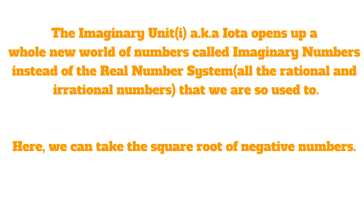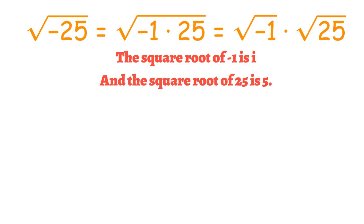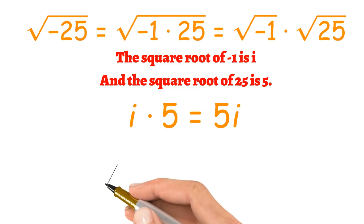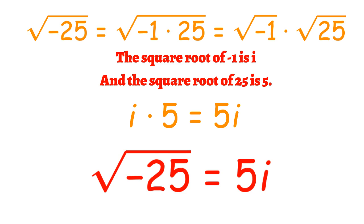Here, we can take the square root of negative numbers, opening up a lot of possibilities. The square root of negative 25 is equal to the square root of negative 1 times 25. This, in turn, is equal to the square root of negative 1 times the square root of 25. We already know that the square root of negative 1 is equal to i, and the square root of 25 is 5. So our answer can be simplified to i times 5, or 5i. The square root of negative 25 is equal to 5i.